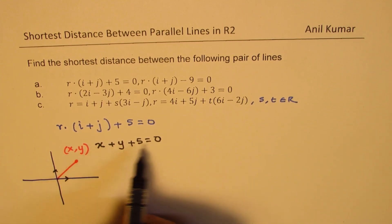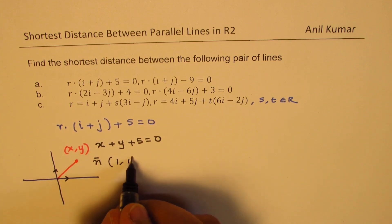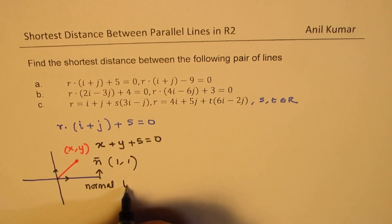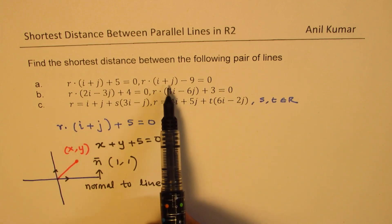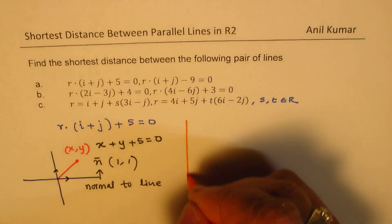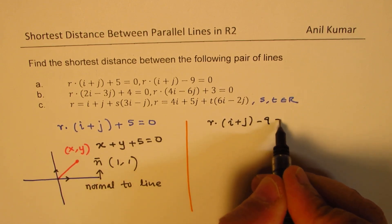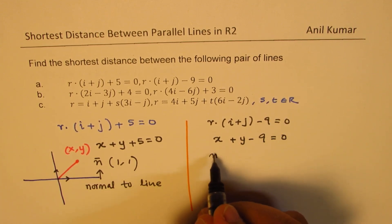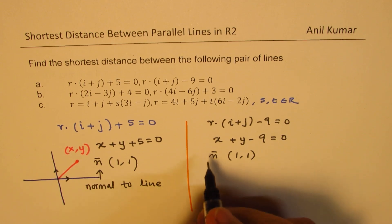That makes sense. The normal vector here is (1, 1) — that is the normal to the line. Similarly, for r dot (i plus j) minus 9 equals 0, we can write x plus y minus 9 equals 0, and the normal vector is also (1, 1). Since both normal vectors are the same, they are parallel lines.